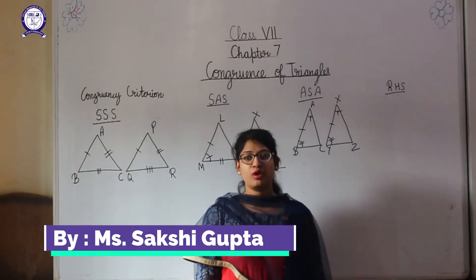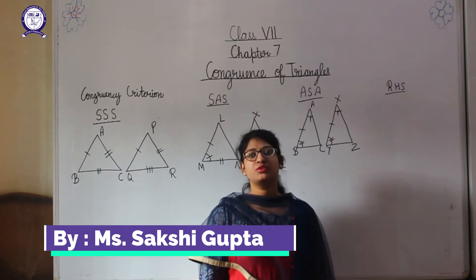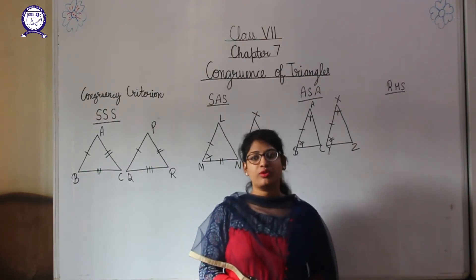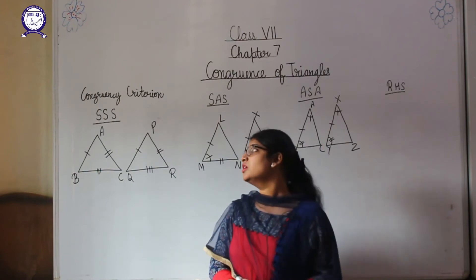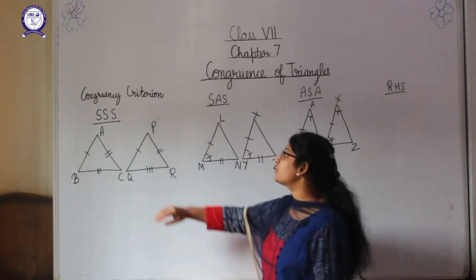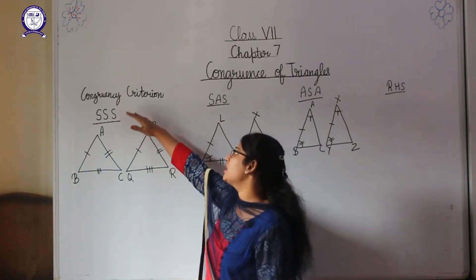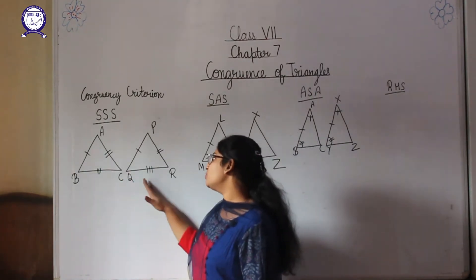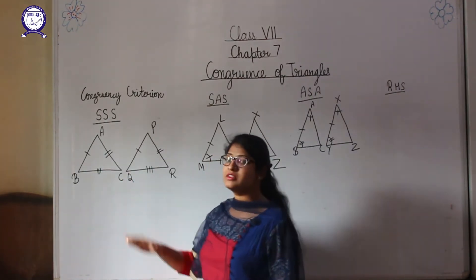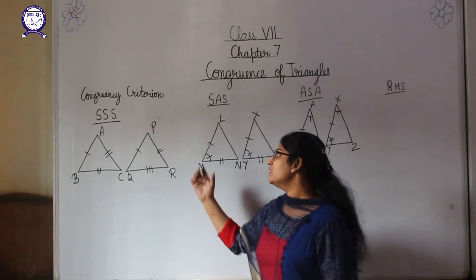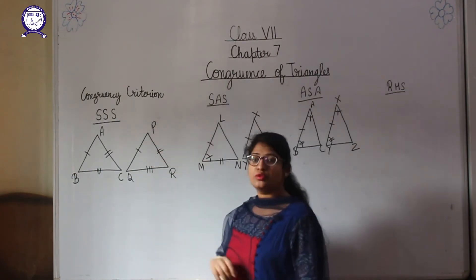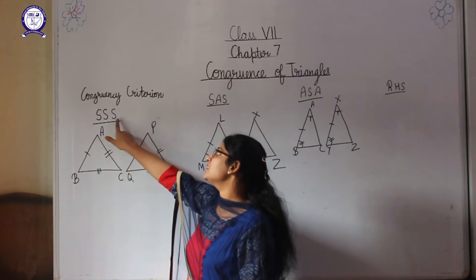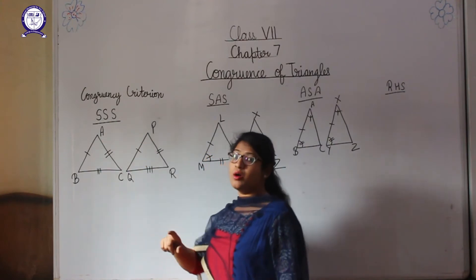Hello students, welcome to the online classes. Today we will continue with chapter 7, that is congruence of triangles. We will study about the congruency criteria. To tell that two triangles are congruent, there are certain criteria we need to follow. The first one is the SSS criteria.